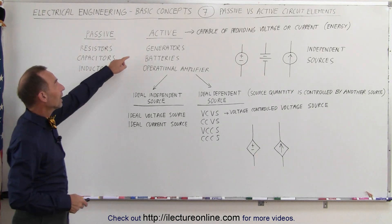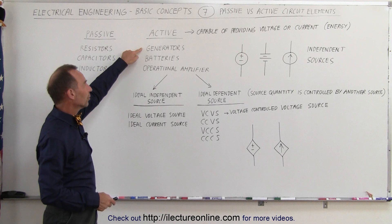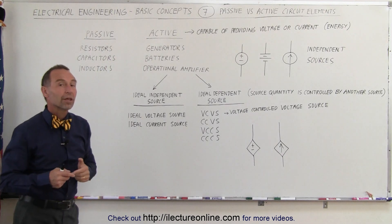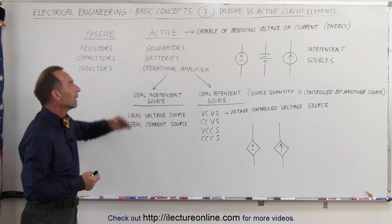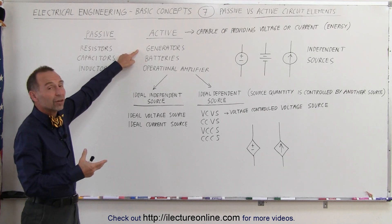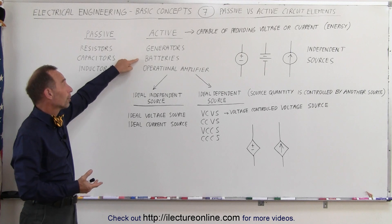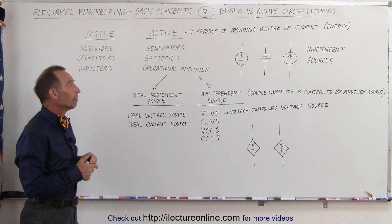In opposition to that we have active elements such as generators, batteries, and operational amplifiers. They are capable of putting energy into the system or into the circuit. Generators can produce a voltage or current, so can batteries, so can operational amplifiers.